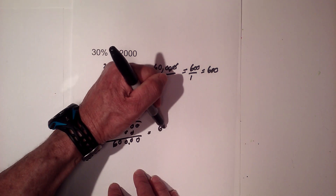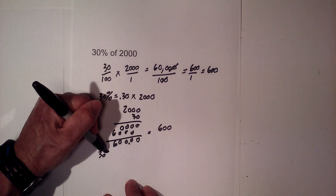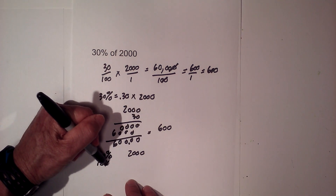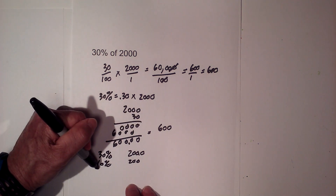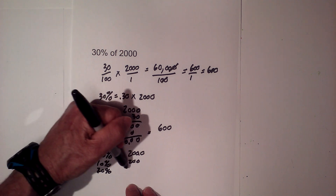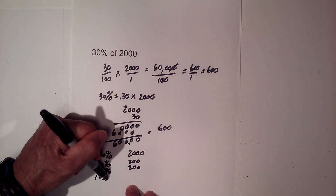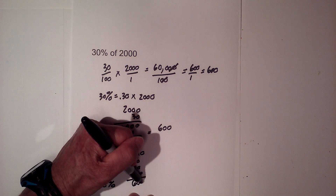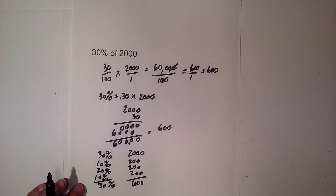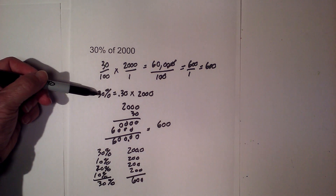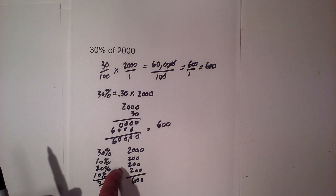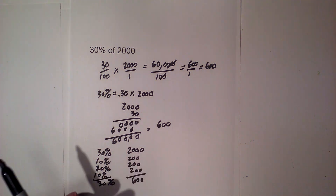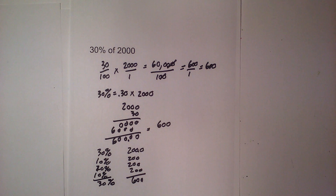To estimate 30% of 2,000: 10% of 2,000 is 200 — just move the decimal one place to the left. Another 10% is 200, and another 10% is 200. Adding together: 200 plus 200 plus 200 equals 600. That's 30%. In summary, you can use fractions, convert to a decimal, or estimate. Thanks for watching — MooMath uploads a new math and science video every day, so please subscribe and share.